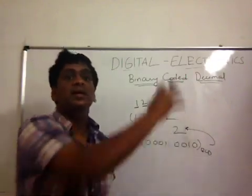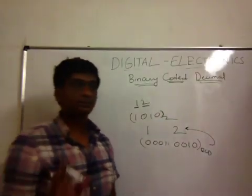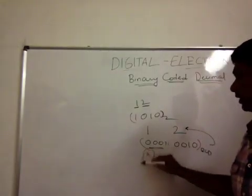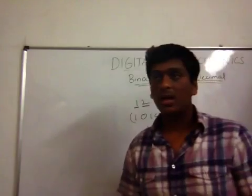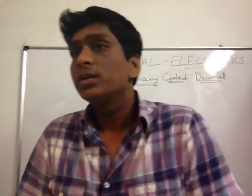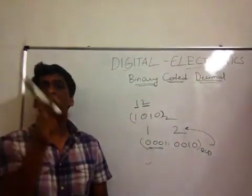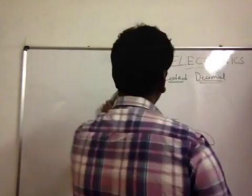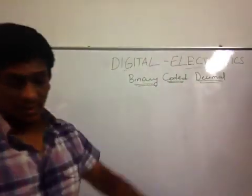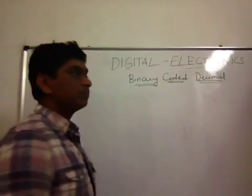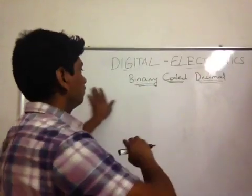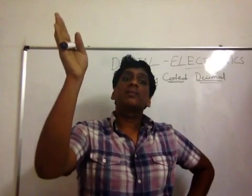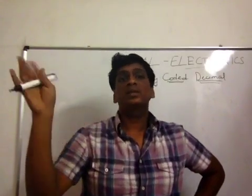If I have a 3-digit number, I will write individually for each of the 3 digits. In BCD, the maximum single digit that is going to come is 9 — beyond that you won't get. Keeping this in mind, additions are done in binary coded decimal. In this session, let us add 2 BCD numbers — first where the sum does not exceed 9, and then where the sum exceeds 9.